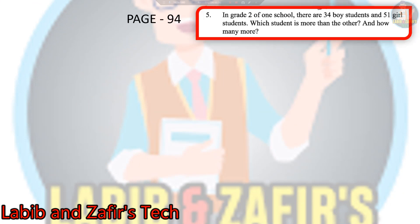So students, now we are on page 94. Here is word problem number 5 of the page: In grade 2 of one school there are 34 boy students and 51 girl students. Which student is more than the other, and how many more?